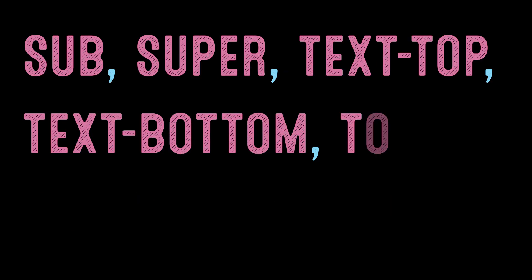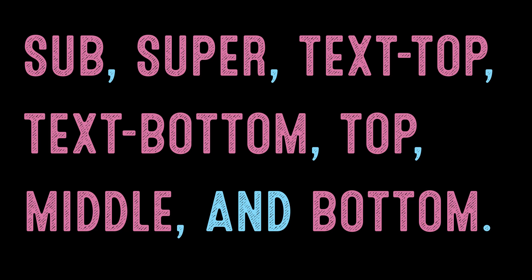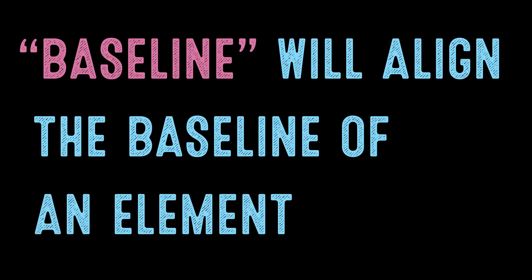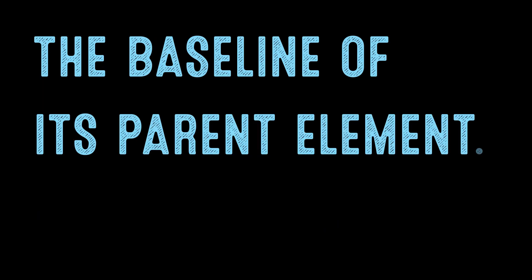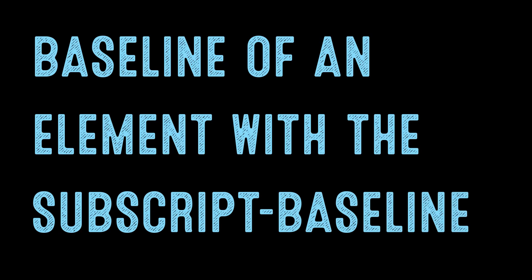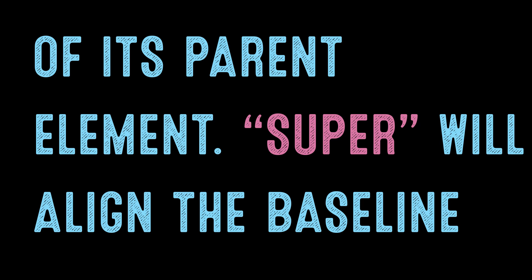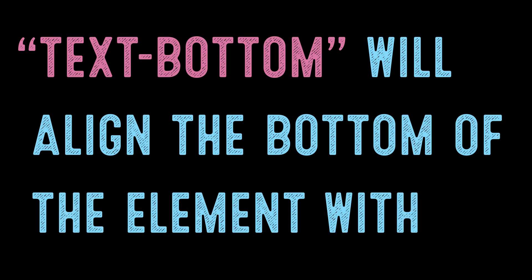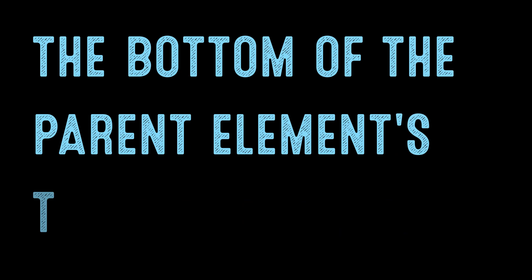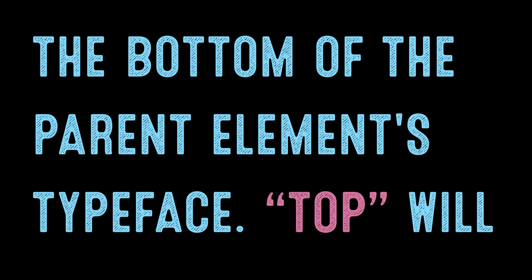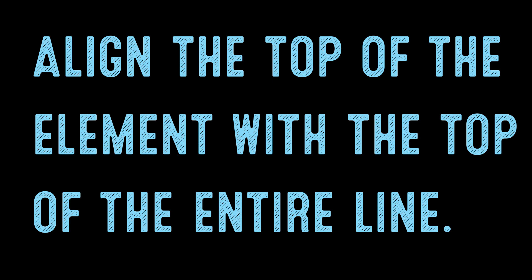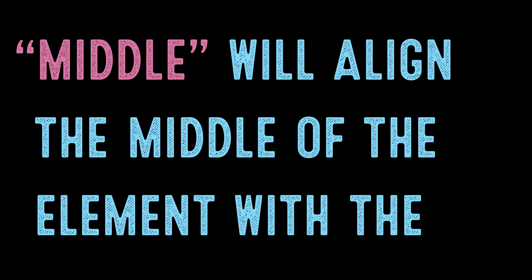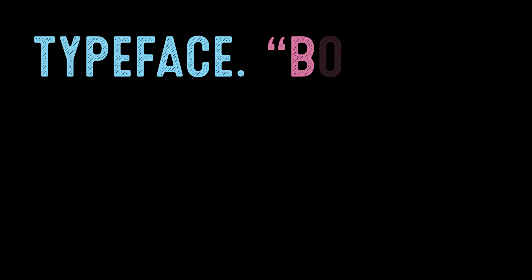The values are: baseline, sub, super, text-top, text-bottom, top, middle, and bottom. Baseline will align the baseline of an element with the baseline of its parent element. Sub will align the baseline of an element with the subscript baseline of its parent element. Super will align the baseline of an element with the super baseline of its parent element. Text-top will align the top of an element with the top of the parent element's typeface. Text-bottom will align the bottom of an element with the bottom of the parent element's typeface. Top will align the top of an element with the top of the entire line. Middle will align the middle of an element with the baseline plus half the x-height of the parent element's typeface. Bottom will align the bottom of an element with the bottom of the entire line.